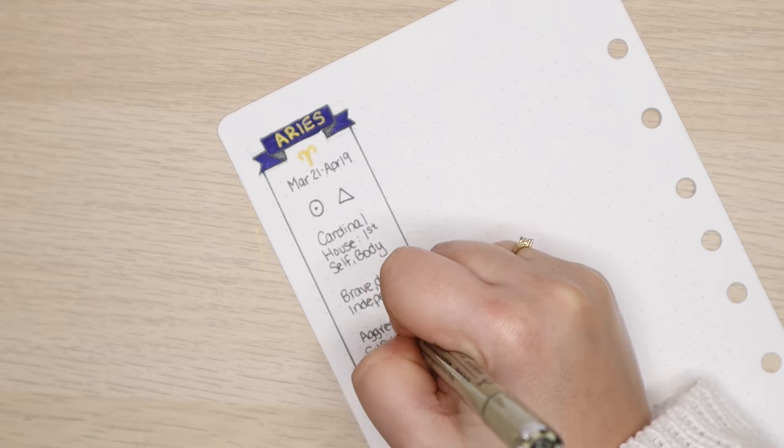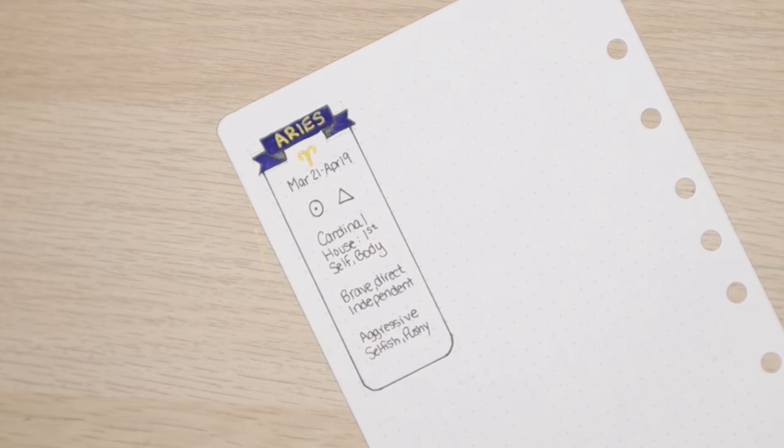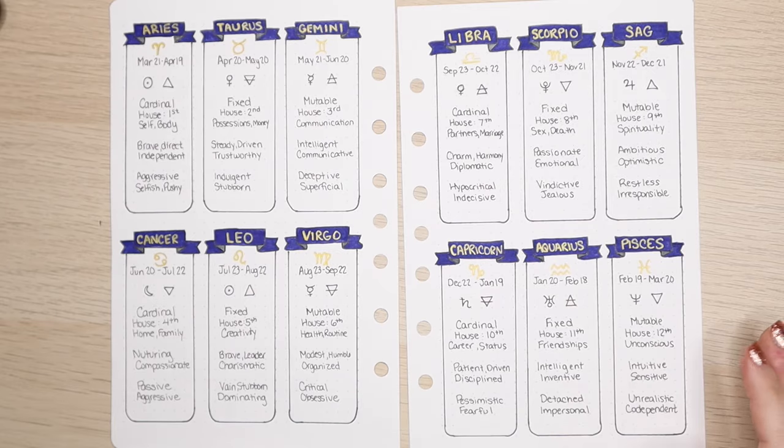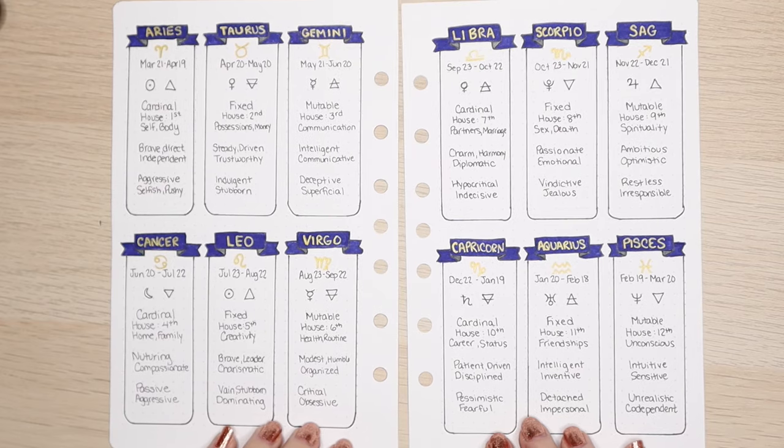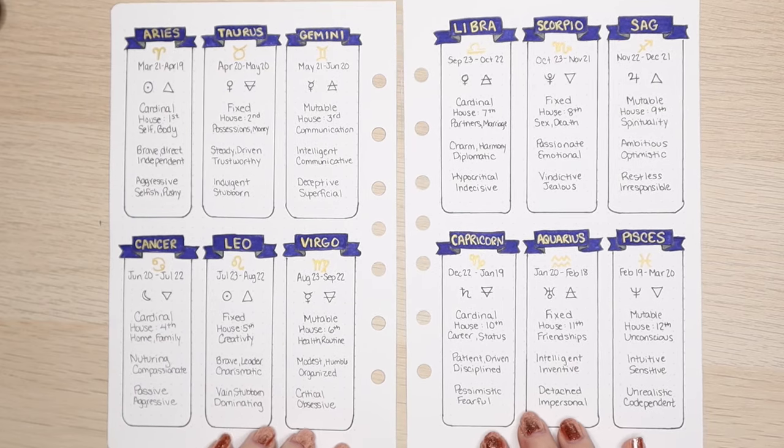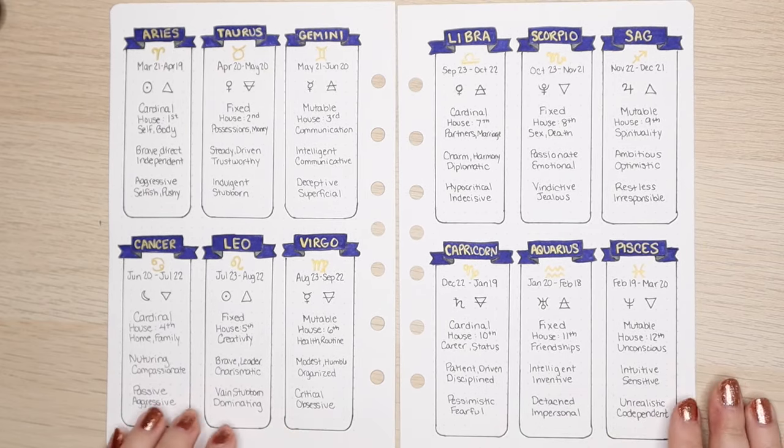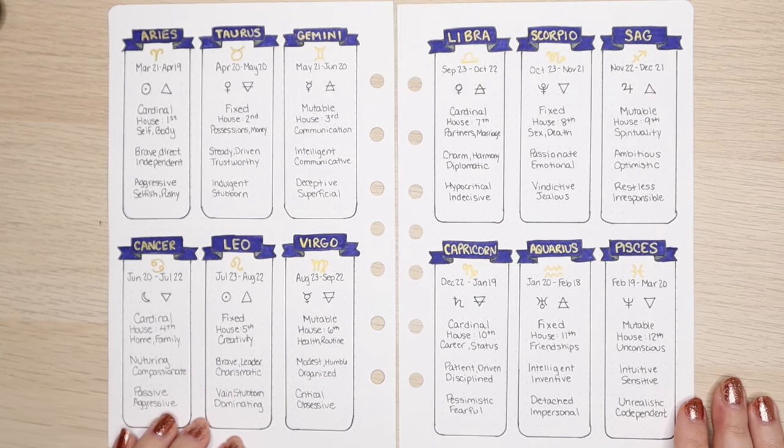Again, we are only scratching the surface and there are so many other traits and things that you can associate with each sign. But if you just meet somebody and you want to get to know what you might be in for, you can turn to your spread and see a few keywords that might represent that person.